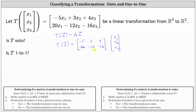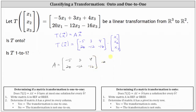Now that we have the equation in the form T(x) = A times vector x, we know matrix A is the two-by-three matrix where the first row is negative five, three, four, and the second row is twenty, negative twelve, negative sixteen. The next step is to write this matrix in row echelon form or reduced row echelon form.